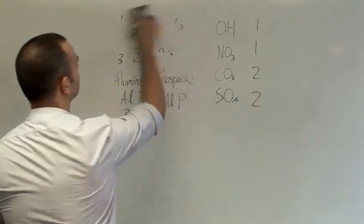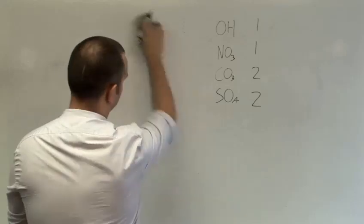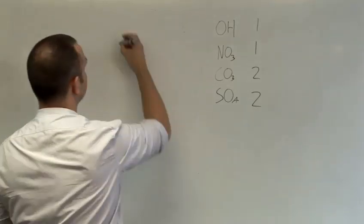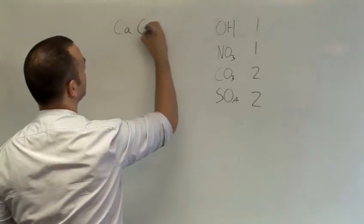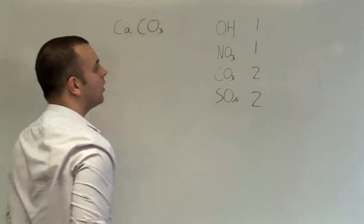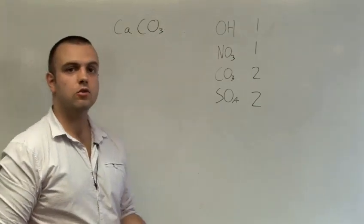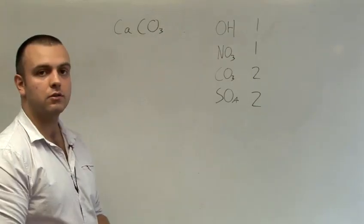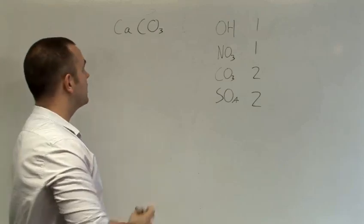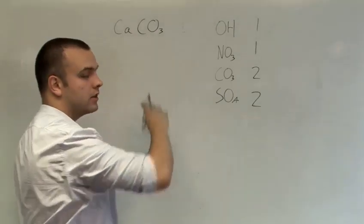So for example, calcium carbonate. Calcium has a valency of 2, being in group 2, and carbonate has a valency of 2 as well. Which means calcium carbonate is just written CaCO3.